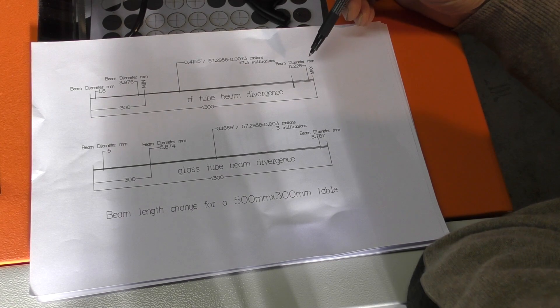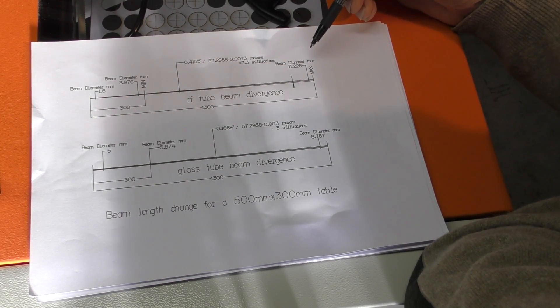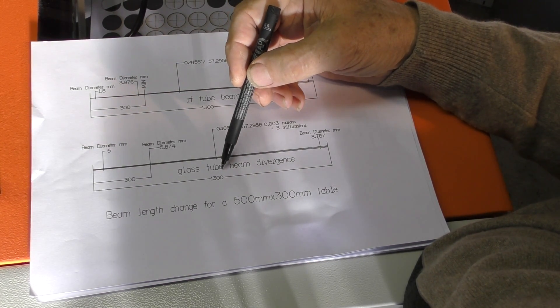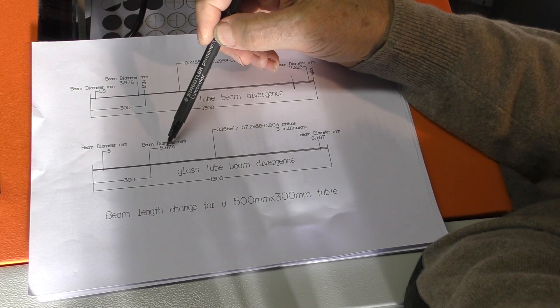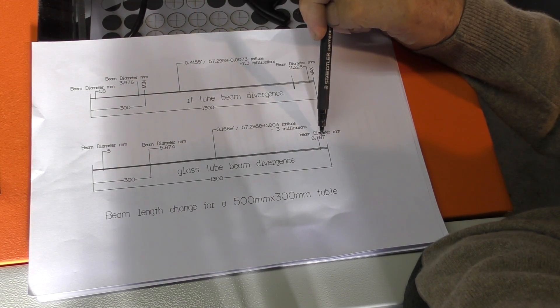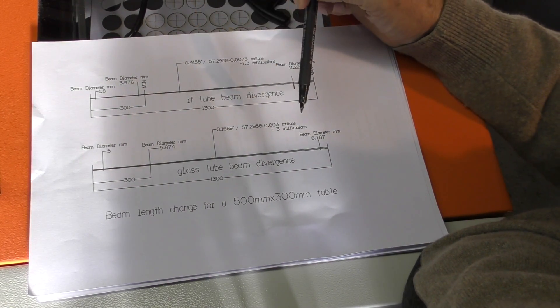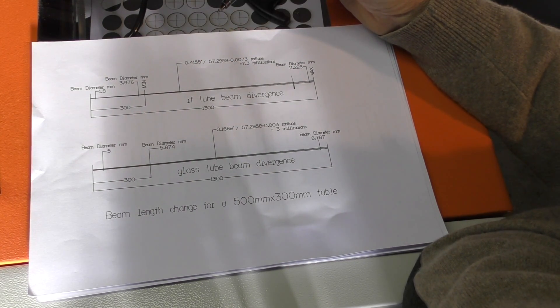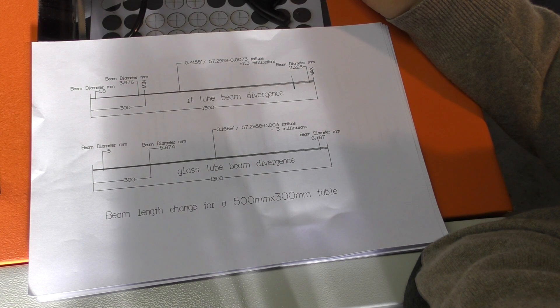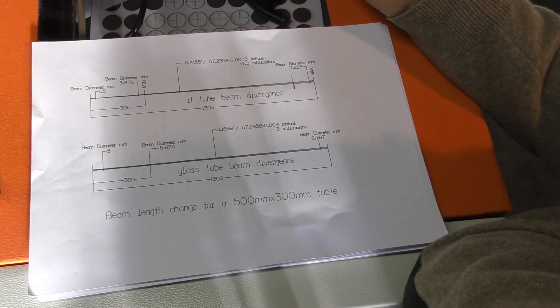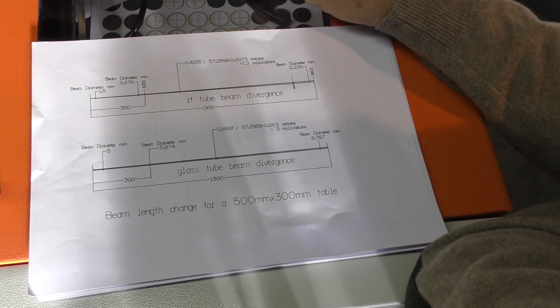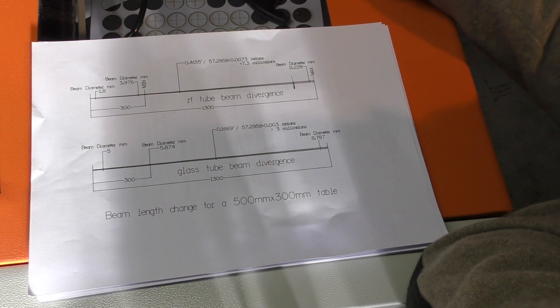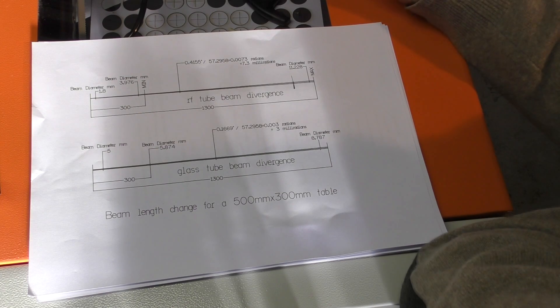In fact, I think I worked it out at something like about 280 percent change. Whereas with the glass tube, we start off at a five millimeter beam and it grows from six millimeters to say nine millimeters. So we've got a three millimeter growth on a five millimeter beam, and that's only about 50 percent. So there is a huge difference in the performance of these raw beams.